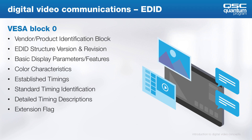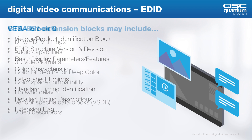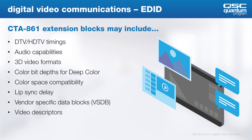Data block 0 is where we find the preferred timing and other characteristics of the sync, and if there are extension blocks, that's where we look. There are many extension blocks supported in EDID, but the CTA-861 extension block, which is shown here, is almost always available in most HDMI syncs.